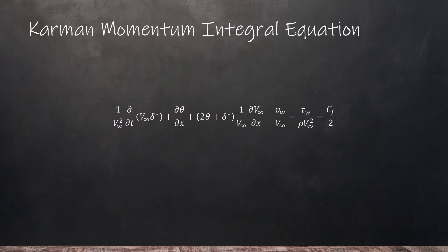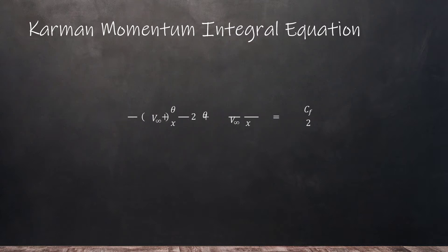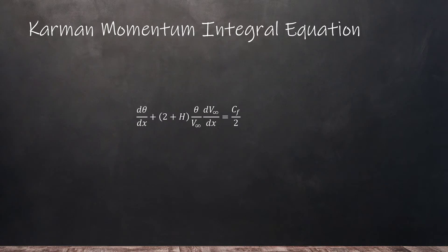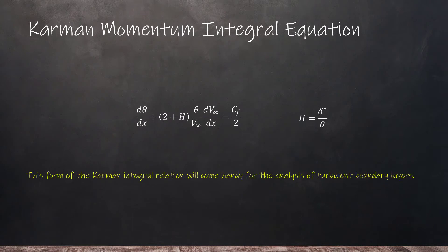Substituting the momentum thickness and displacement thickness terms, we can rewrite this equation and connect it to the skin friction coefficient. Under the assumption of steady flows and non-porous walls, we can reduce the expression to a simpler form where H is the shape factor. This form of the Kármán integral relation is used in the analysis of turbulent boundary layers.